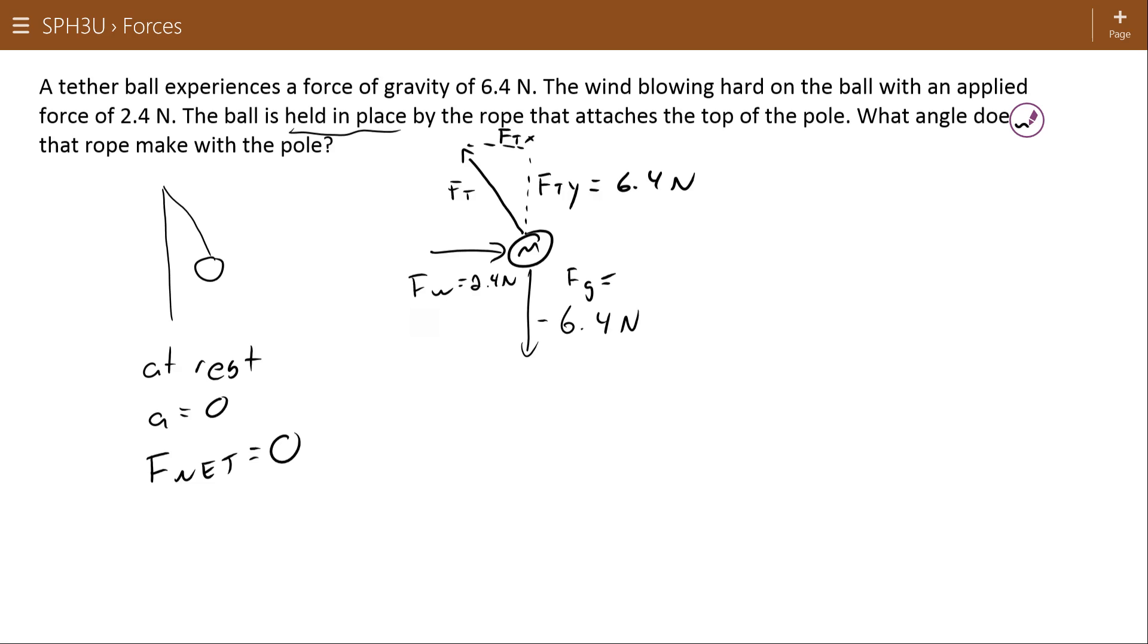Similarly, the wind is pushing to the right at 2.4 newtons, so the tensile force must be pulling back at negative 2.4 newtons to cancel those out. So what we have here are two components of a vector that we can combine to get the overall vector.